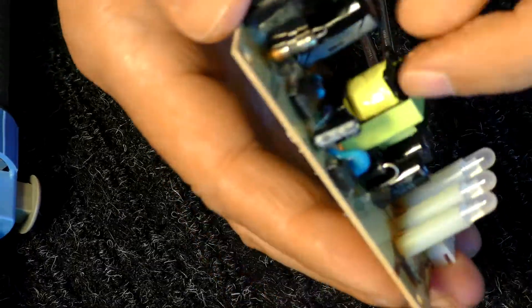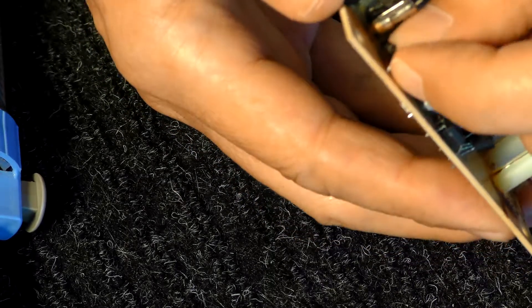A solder vacuum tool will remove solder from board terminal circuit components, allowing replacement.